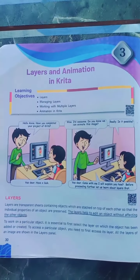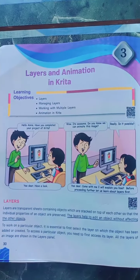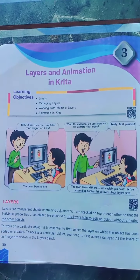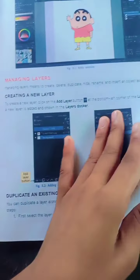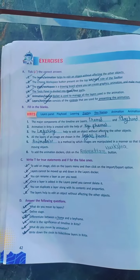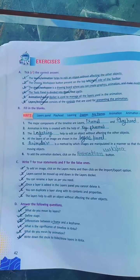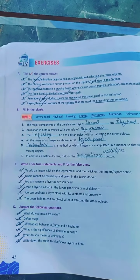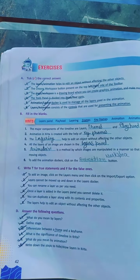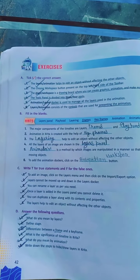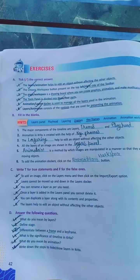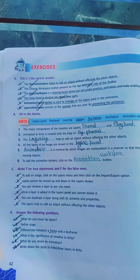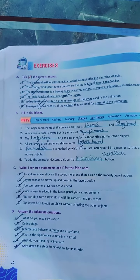Hey guys, we are discussing the layer animation in Krita. Exercise: the tick is the correct answer. The dash helps to exit the object; the function of the object is called layer.